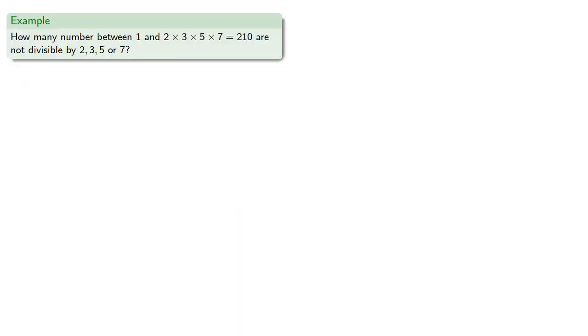So let's consider another example. Let's consider how many numbers between 1 and 2 × 3 × 5 × 7 = 210 are not divisible by 2, 3, 5, or 7.